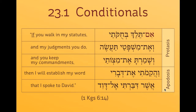This is an example from 1 Kings 6:14, with a much longer conditional sentence. I'll read in Hebrew, translate, and then we'll talk about some observations about how Hebrew does this. Im telech bechukotai, ve et mishpatai ta'ase, ve shmarta et mitzvotai, vahakimoti et devarai asher dibarti el david. Translation: if you — God talking to Solomon — walk in my statutes, and my judgments you do, and you keep my commandments, and I will raise up my word that I spoke to David.